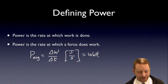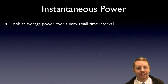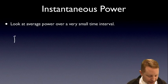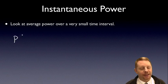Now instead of looking at just average power, we could also look at instantaneous power, the power delivered at a specific instant in time. We're looking over a very small time interval. So power now is going to be the limit as time approaches zero of delta w over delta t, or the differential of work with respect to time.